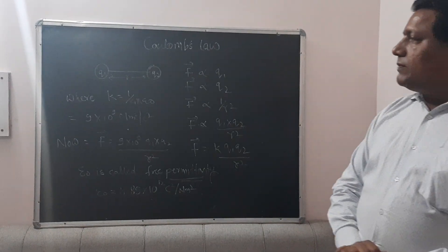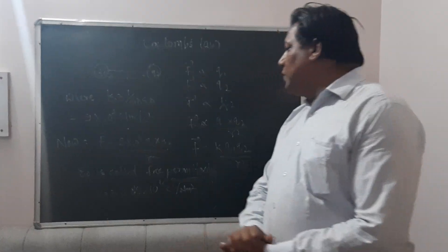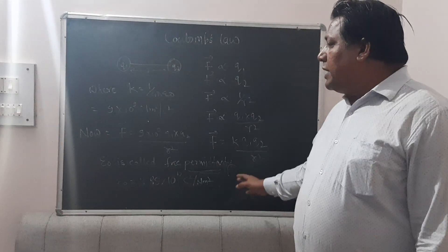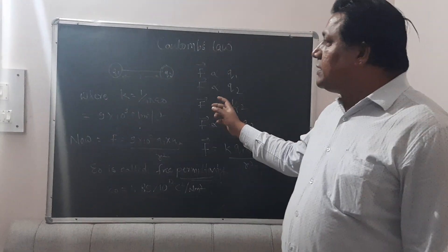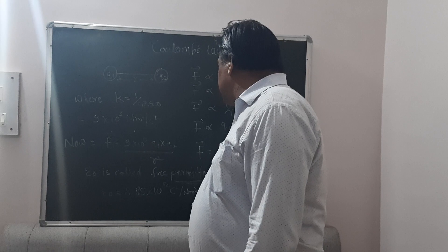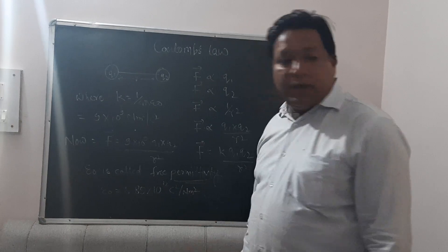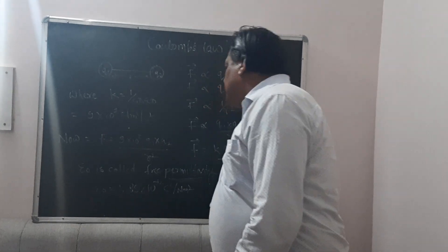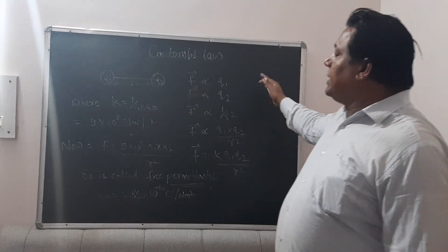One more thing: a figure of epsilon zero (ε₀) appears here. We can write k = 1 / (4π·ε₀), where ε₀ is called the permittivity of free space. Permittivity means the behavior of the medium, which can oppose the nature of the force acting between the two charged particles. The value of ε₀ is 8.85 × 10⁻¹² C²/(N·m²).